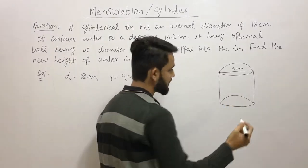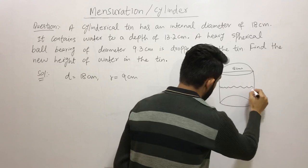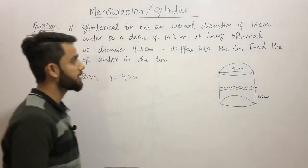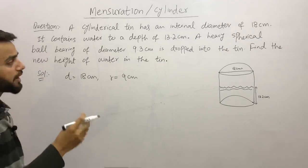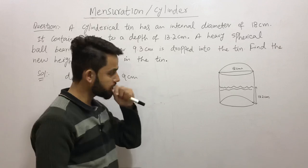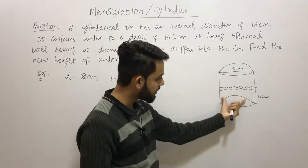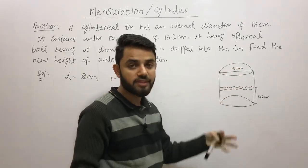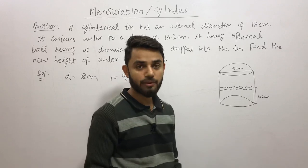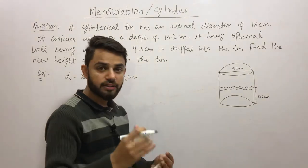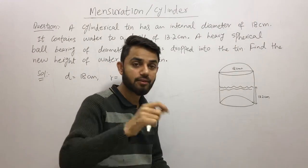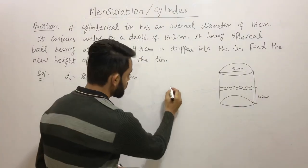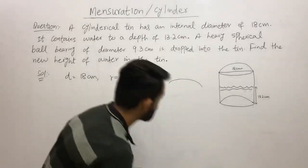The tin contains water to a depth of 13.2 centimeters — that's the current water level height. Now, a heavy spherical ball bearing of diameter 9.3 centimeters is dropped into it. Once you drop a heavy object into a cylinder with water, the water level increases. That's a simple experiment we've done many times — take a cup with water and add an object and the level rises.